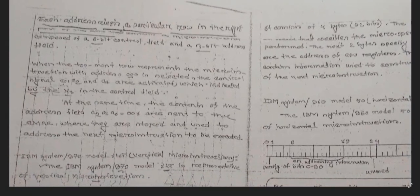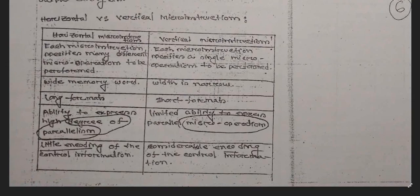In this section we discuss each address selection and row selection techniques, which are also very important for your examinations. Horizontal microstructure and vertical microstructure are also important for your examination. This one is a long format and this one is a short format.